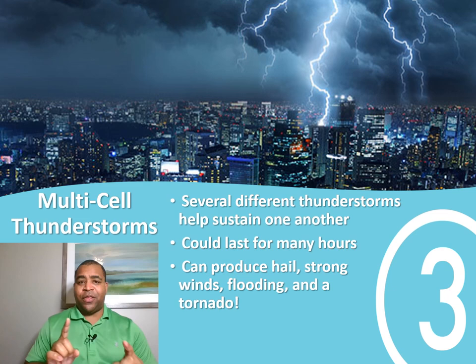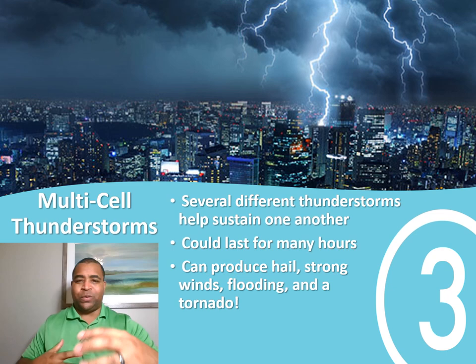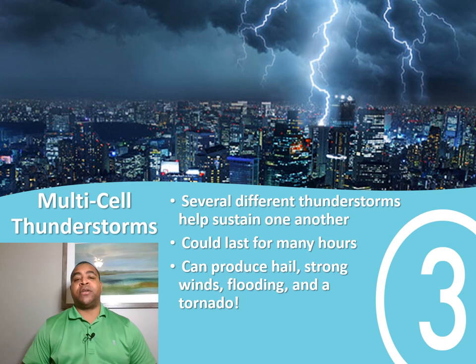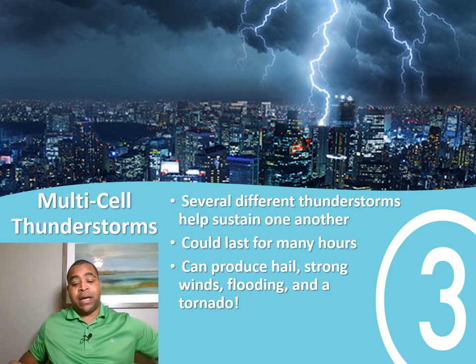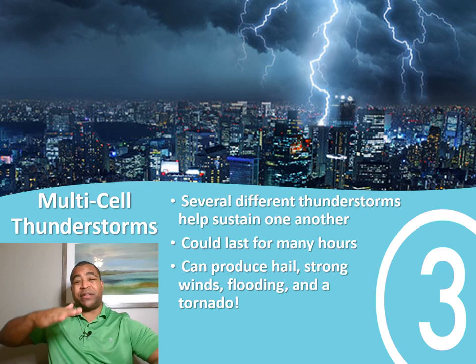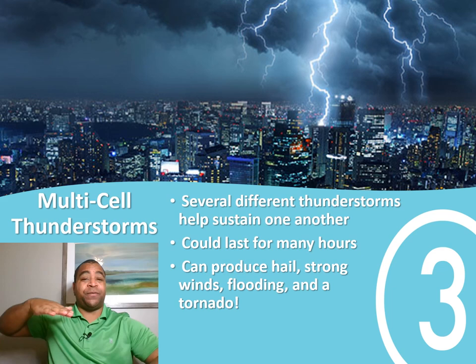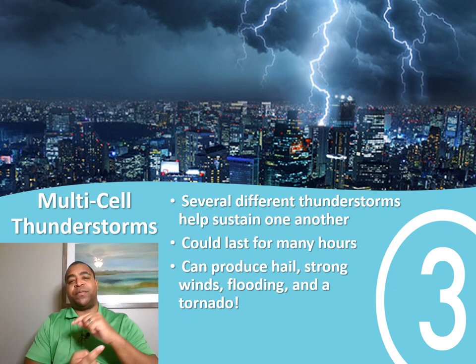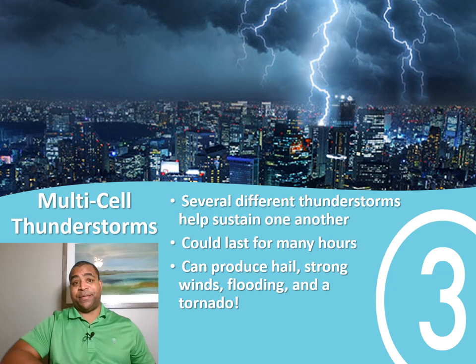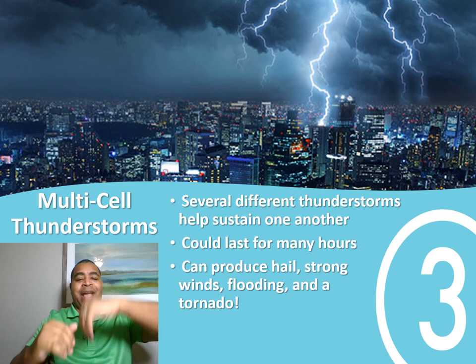Remember, it's not just about cold air and warm air meeting — the other part is when you have a turning of the wind with height. What I mean is that at one level it's going from east to west, but then maybe 1,000 feet up in the air it's instead moving from southwest to northeast. When we have that turning of the winds, that's usually when we start to see rotation. That happens in multi-cell thunderstorms because of those updrafts pushing air way up high and those downdrafts where the air comes back down.